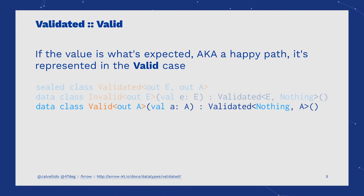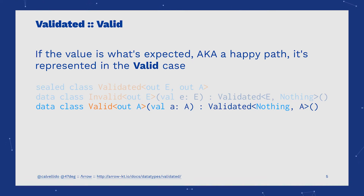This is important because Validated is, like Either, right-biased. This means that most of the functions, like map and filter, will operate over the Valid case.